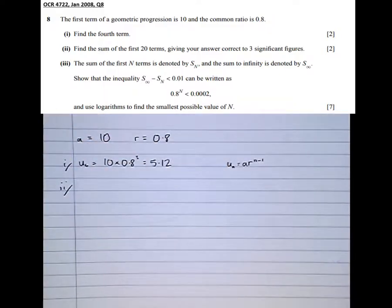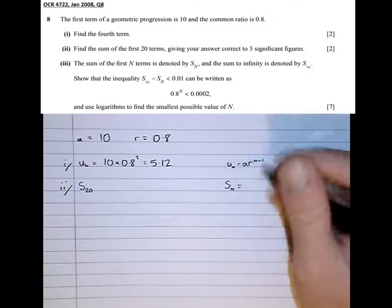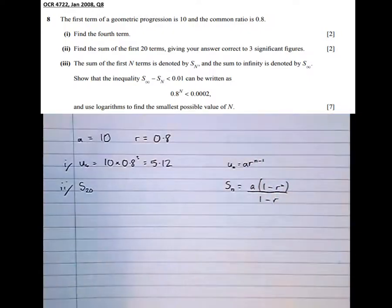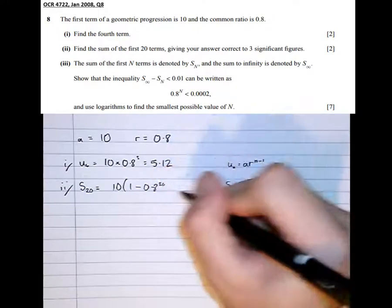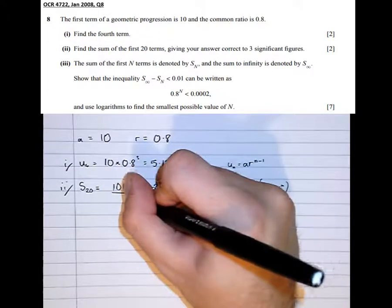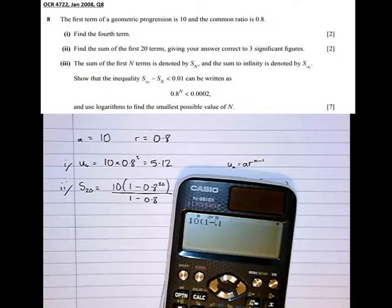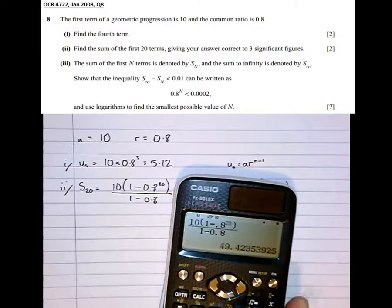Part 2: find the sum of the first 20 terms, giving the answer correct to three significant figures — that's S20. Consulting the formula booklet, the sum of the first n terms is A times (1 minus R to the n) over (1 minus R). Substituting the numbers: 10 times (1 minus 0.8 to the power of 20) over (1 minus 0.8), which gives 49.4 to three significant figures.